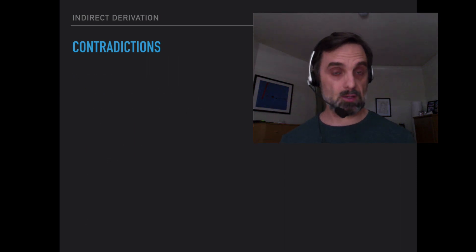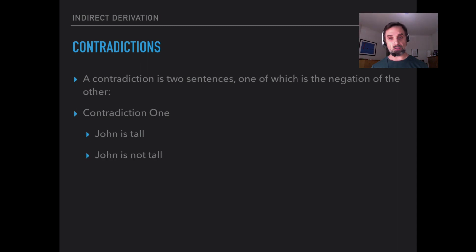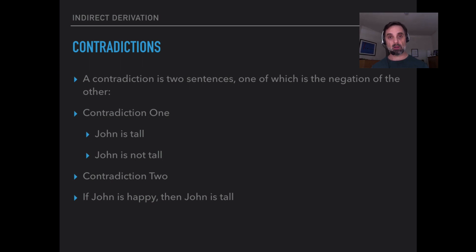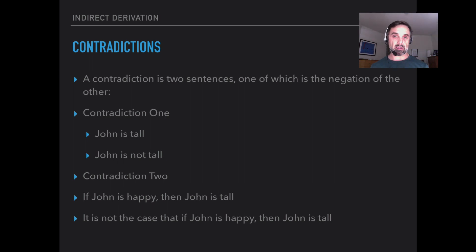One thing to note: what do we mean by contradiction? A contradiction is two sentences, one of which is the negation of the other. For example, 'John is tall' and 'John is not tall.' Or, 'If John is happy, then John is tall' and 'It is not the case that if John is happy, then John is tall.' In both cases, we have a sentence and the negation of that sentence — that's what makes a contradiction. It's impossible for both sentences in a contradiction to be true; at least one of them is always false.